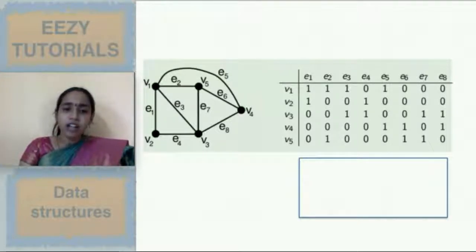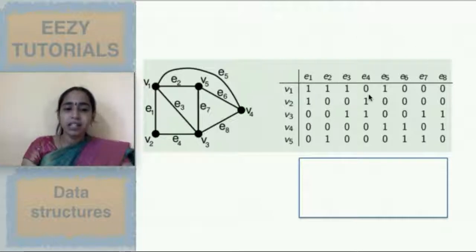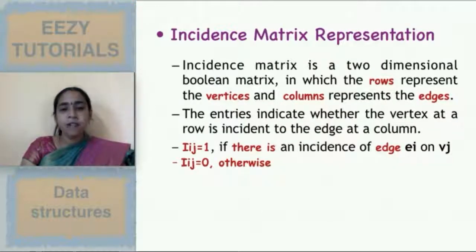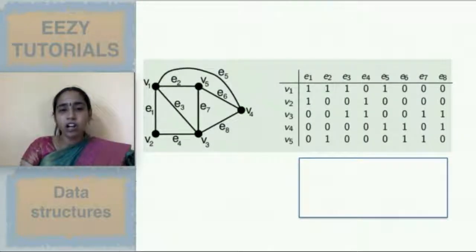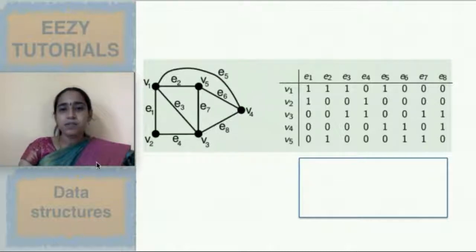So you are visually seeing a graph, but a computer program cannot see this graph. For that reason we have to make representations using zeros and ones in the form of arrays or array-based lists. These are the three forms of graph representation we saw today. In the next lecture we will be seeing a few more graph algorithms. Stay tuned to Easy Tutorials — share, like, subscribe, and comment. Thanks for watching.